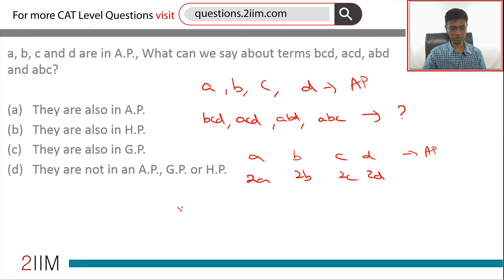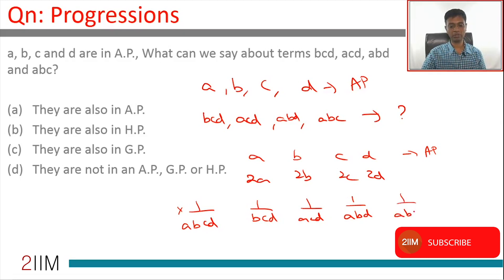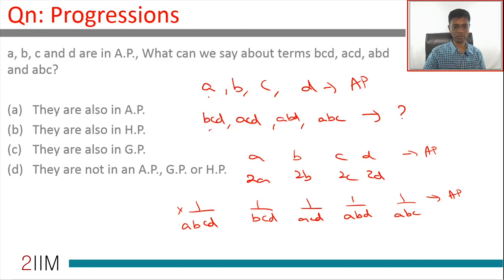The best possible way to multiply or divide this is to multiply this sequence by 1/(abcd). So this term would become 1/(bcd), 1/(acd), 1/(abd), 1/(abc). These are also in A.P. Why did we choose 1/(abcd)? Because we want to cancel off a and have only bcd. We have a here, only bcd here - that one term we need to knock off.